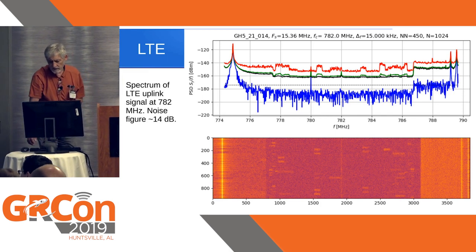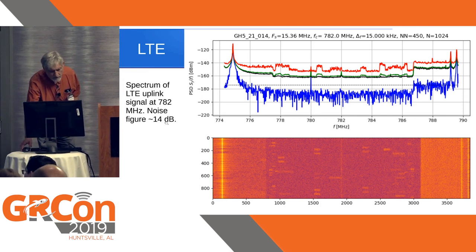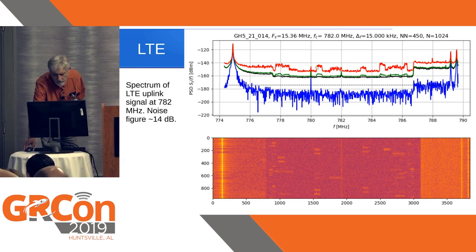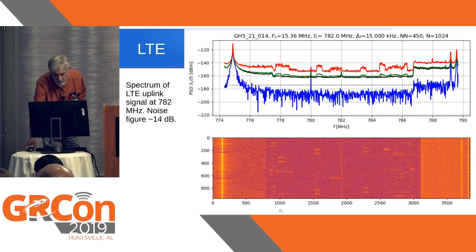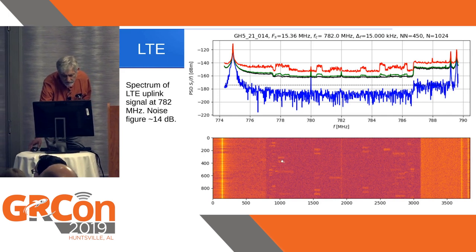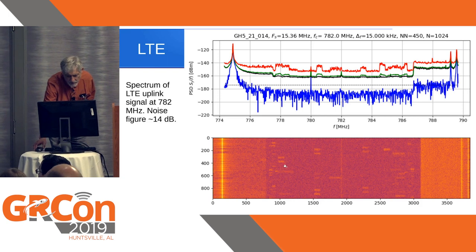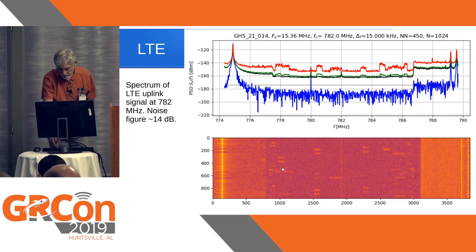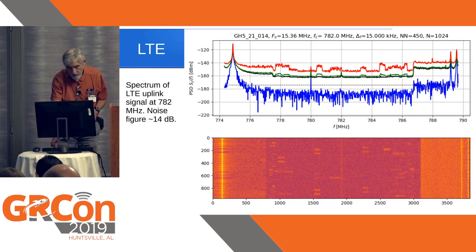Here are some results from an LTE uplink signal. You can see up here what the spectrum looks like — these are individual transmissions. In the waterfall plot below, you can see some of the resources being used by mobiles transmitting through the uplink channel.